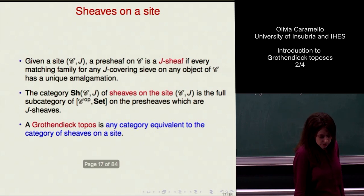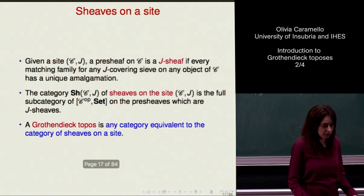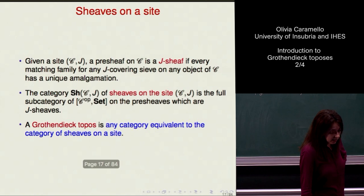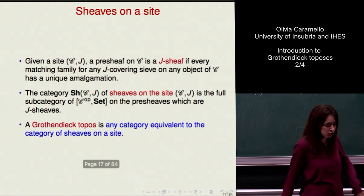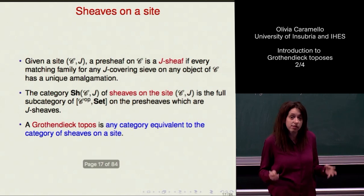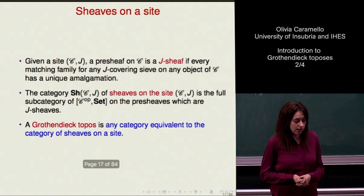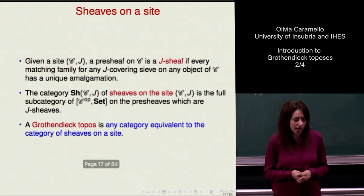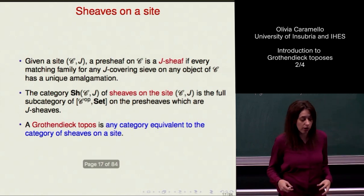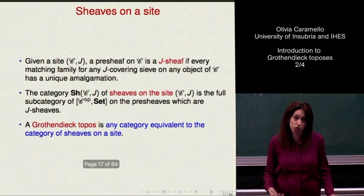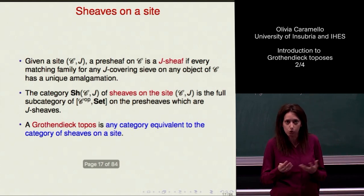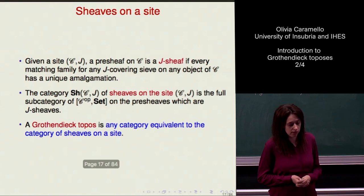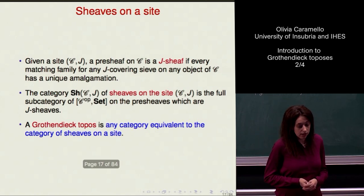A Grothendieck topos is defined formally as any category equivalent to the category of sheaves on a site. There is a fundamental ambiguity in this definition: in principle one could have different sites giving rise to equivalent toposes. But this ambiguity should not be seen as a negative element; rather, it formalizes precisely the phenomenon which occurs when different languages are used to describe the same structures, expressing a very general form of mathematical duality or equivalence. It is really possible to exploit this ambiguity in a fruitful way — the entire bridge technique will be about that.